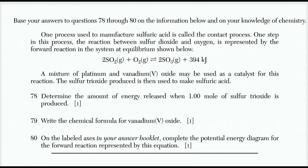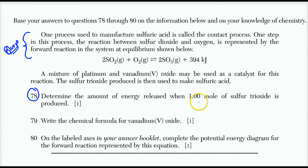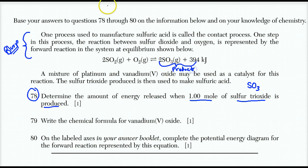Numbers 78 through 80 are based on the information below — go to the questions first. Number 78: determine the amount of energy released when 1.0 mole of sulfur trioxide is produced. Looking at the equation, we can see the energy on the product side, confirming this is exothermic. The stoichiometric coefficient shows that for every two SO₃ produced, 394 kilojoules are released.